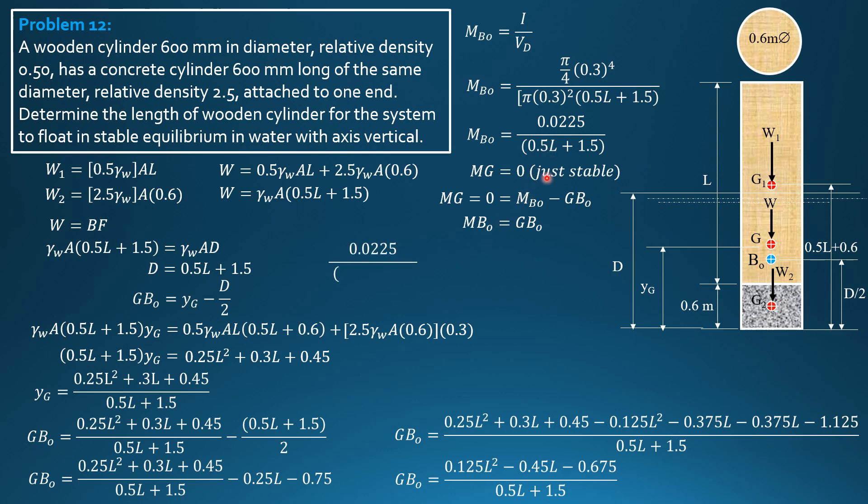MbO equals 0.0225 over 0.5 L plus 1.5 and GbO equals 0.125 L square minus 0.45 L minus 0.675 all over 0.5 L plus 1.5. We can cancel the denominators, then 0.125 L square minus 0.45 L minus 0.675 equals 0.0225. Solving for L in this quadratic formula, there's only one positive root, and that is 4.770. That's it for this problem.